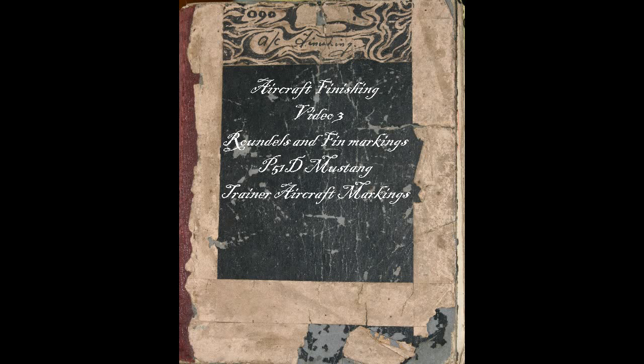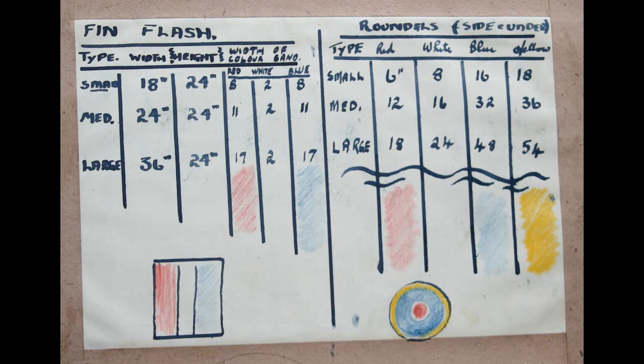Aircraft Finishing Video 3: Roundels and Fin Markings, P-51D Mustang Trainer Aircraft Markings. This section shows in inches the three sizes of fin flashes and roundels for side and underwing.